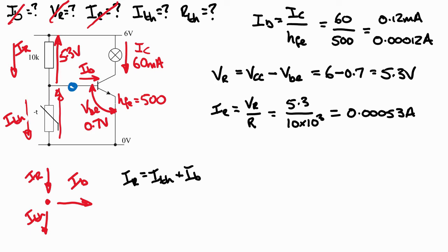Given that we're trying to calculate what Ith is, we rearrange so Ith equals the current through the resistor take away the base current. Substituting values, that becomes 0.00053 subtract 0.00012, which equals 0.00041 amps or 0.41 milliamps. So that has now established this value.